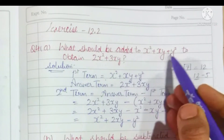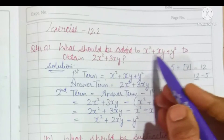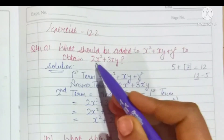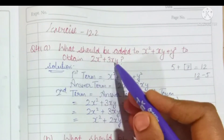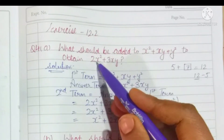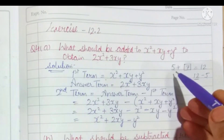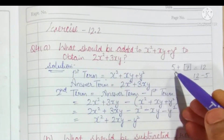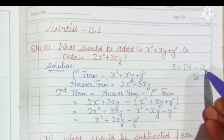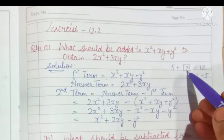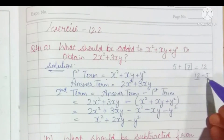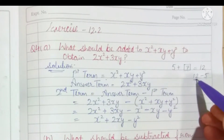Here we need to find what should be added to this expression to obtain this expression. Consider this as a first term and this is the answer term. For example, what should be added to 5 to get 12? It will be 7, and how can we find? We can subtract 5 from the answer 12.